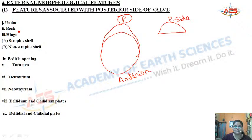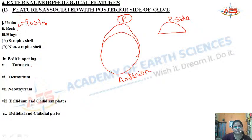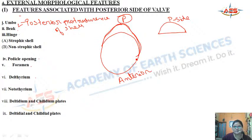The features found on the posterior side include: umbo, beak, hinge, pedicle opening, foramen, delthyrium, notothyrium, deltidial and chilidial plates. The umbo is the posterior protuberance of the shell — an elevated portion at the posterior part of the shell.